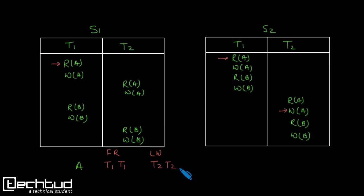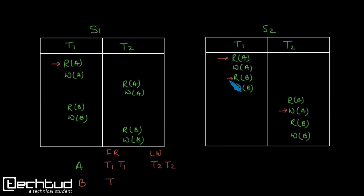Similarly, let's check for variable b. The first read on b is being performed by transaction t1 in schedule s1, and here also in s2 the first read is performed by transaction t1. For the last write on b, it is performed by t2 in s1 and also by t2 in s2.